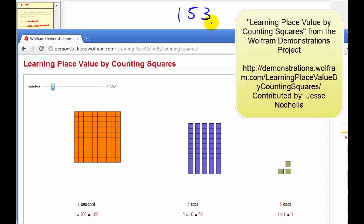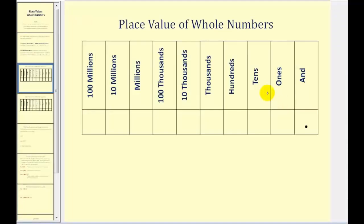Now let's take a look at a more comprehensive place value chart. As we work our way from left to right using place value, we have the ones, tens, hundreds, thousands, hundred thousands, millions, ten millions, hundred millions, and so on.